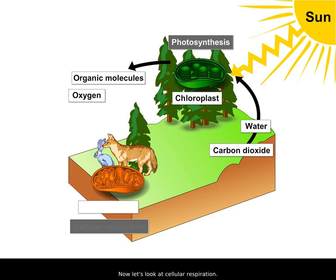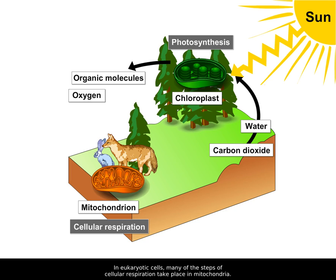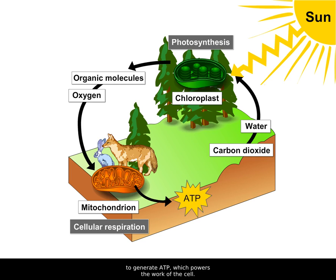Now let's look at cellular respiration. In eukaryotic cells, many of the steps of cellular respiration take place in mitochondria. Organic molecules and oxygen from photosynthesis are used in cellular respiration to generate ATP, which powers the work of the cell.